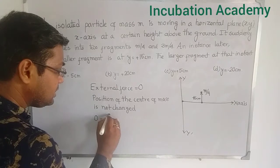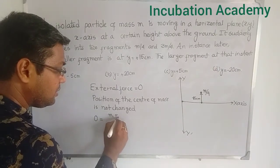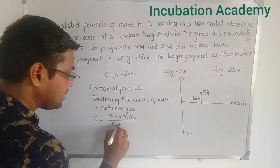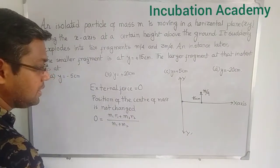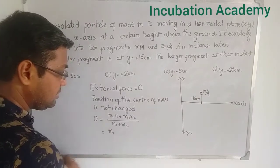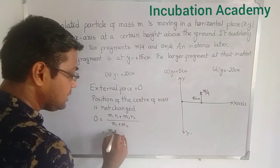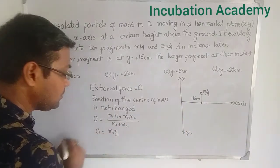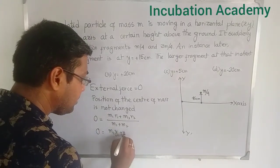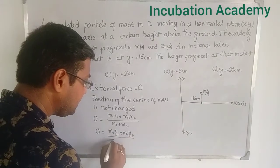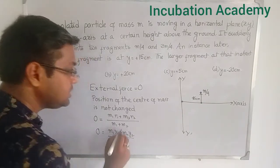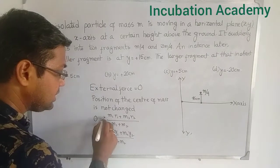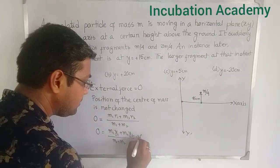So if I write down the center of mass formula: m1·r1 + m2·r2 divided by (m1 + m2). We can take the y-component of this equation, since the x-coordinate is not changed. I am taking only the y equation of the center of mass, and that equals 0.